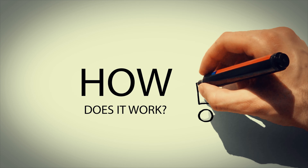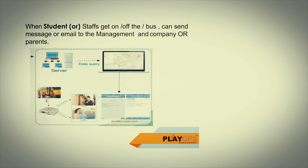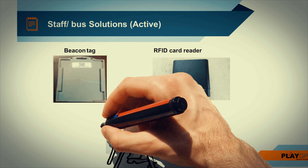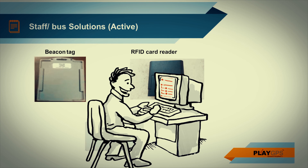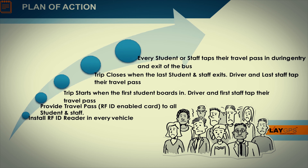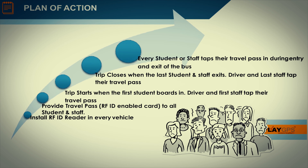How does it work? When students or staff get on or off the bus, it can send a message or email to the management, company, or parents. The system uses three types of hardware: beacon, tag, and RFID card reader. Every student or staff taps their travel pass during entry and exit of the bus.